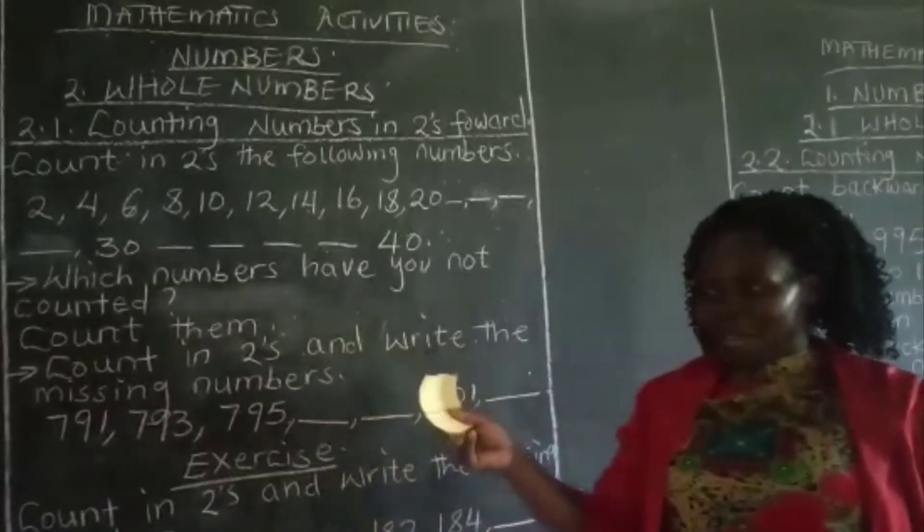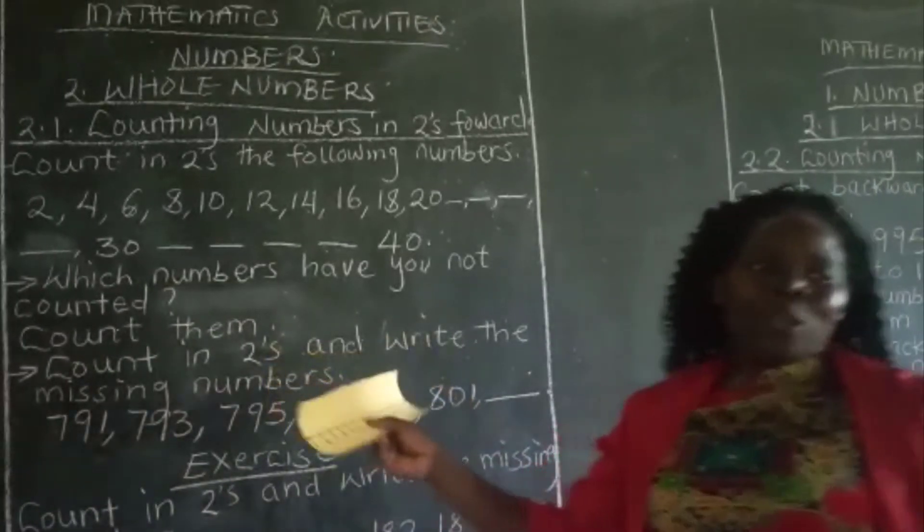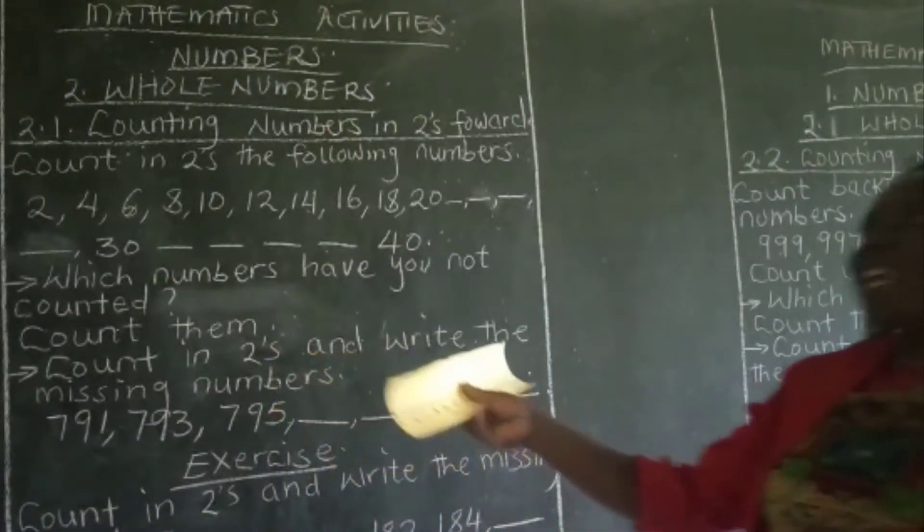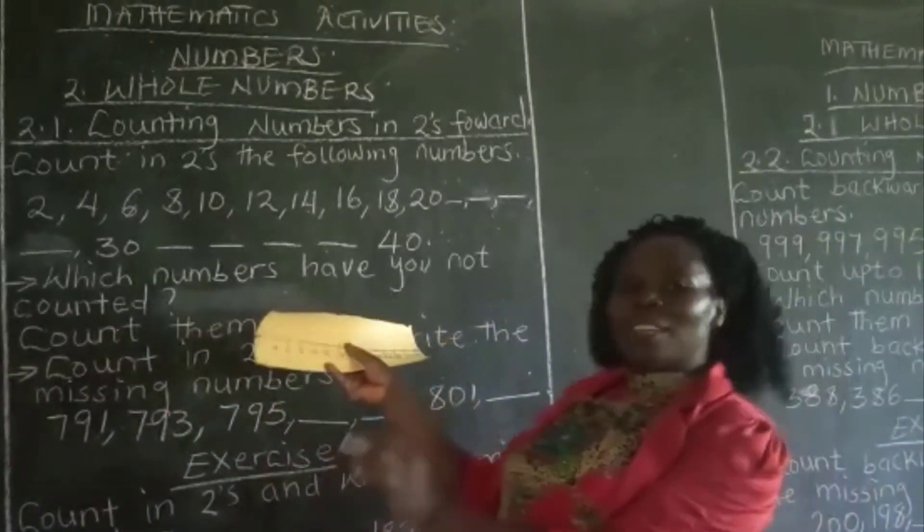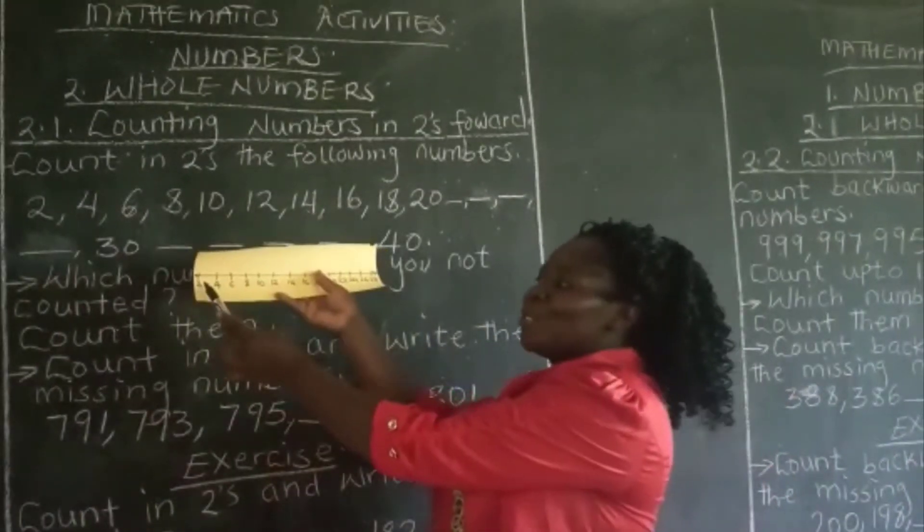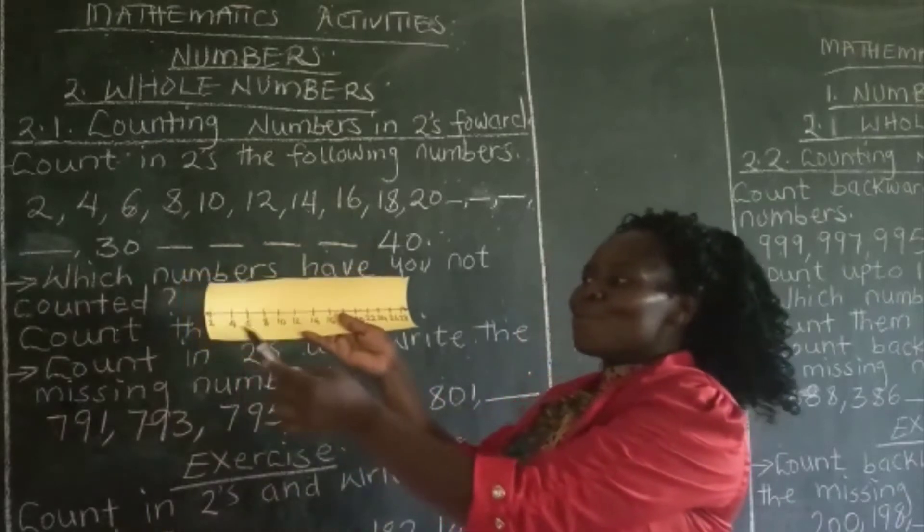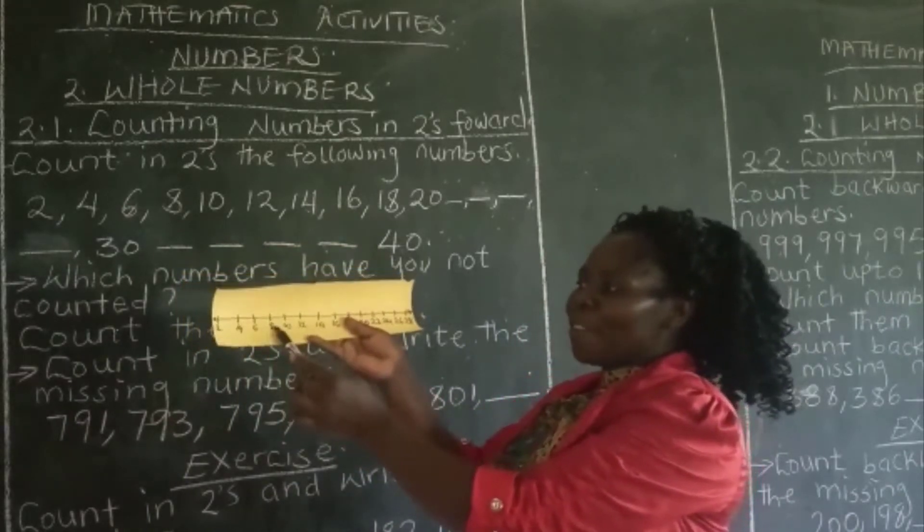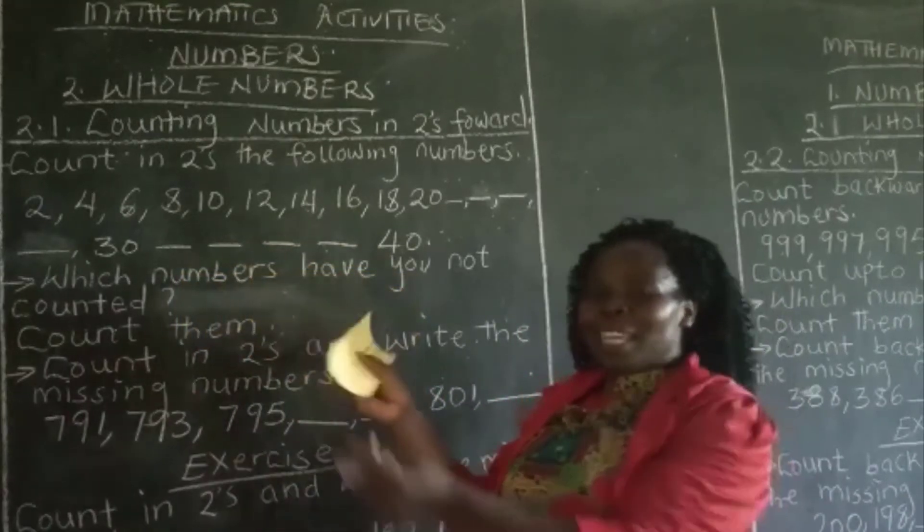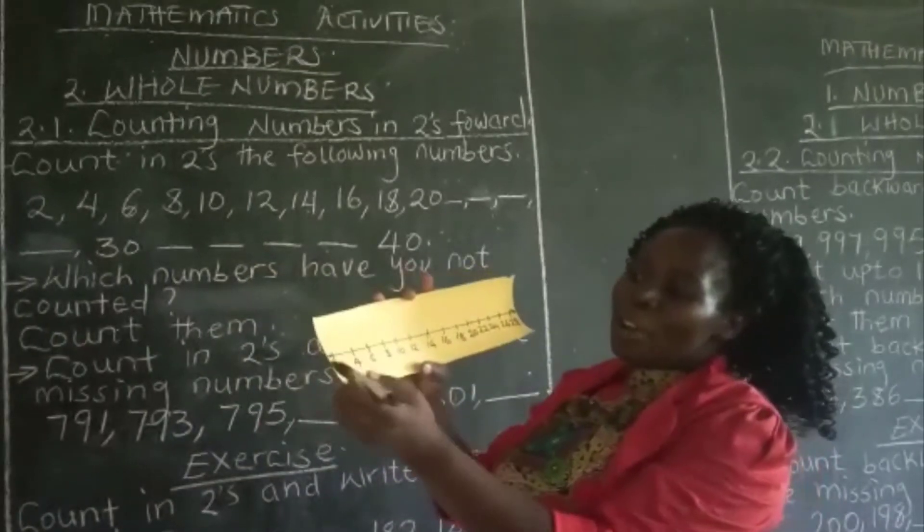This one is our number line. And when you look at the numbers, they have been counted in twos forward. We have 2 here, we have 4, we have 6, we have 8. So when you are counting the numbers forward, we go this way.